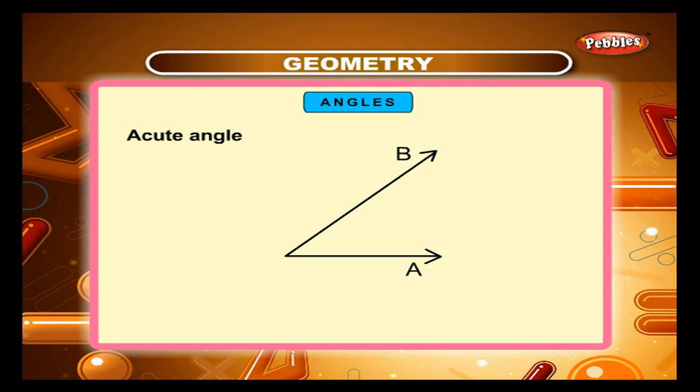Whenever two rays meet at a point, an angle is formed. The point where two rays meet is called the vertex. And the rays form the arms of the angles.